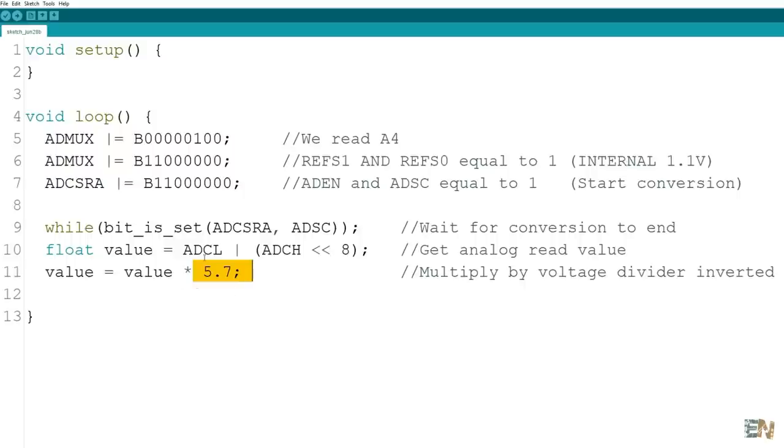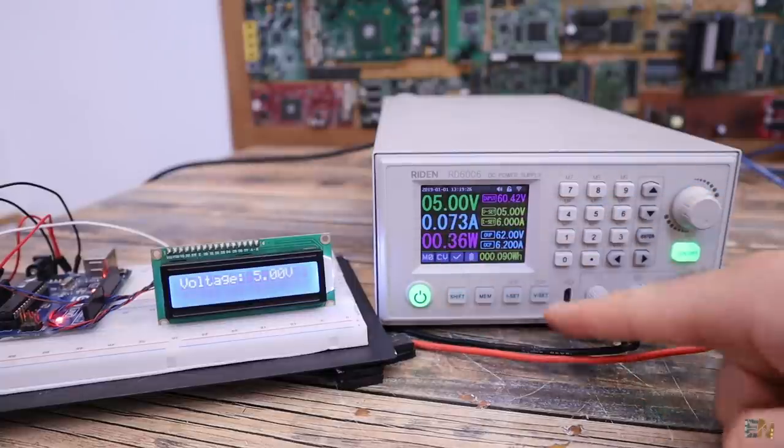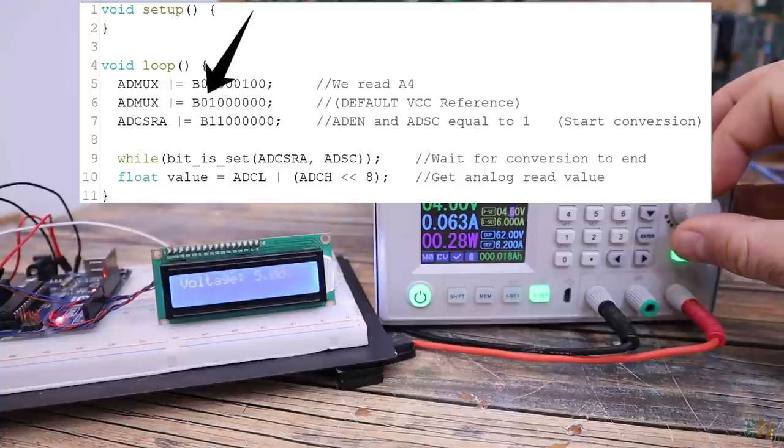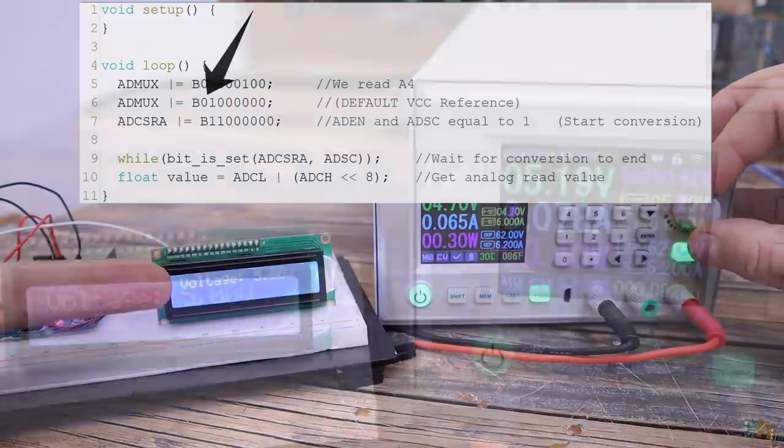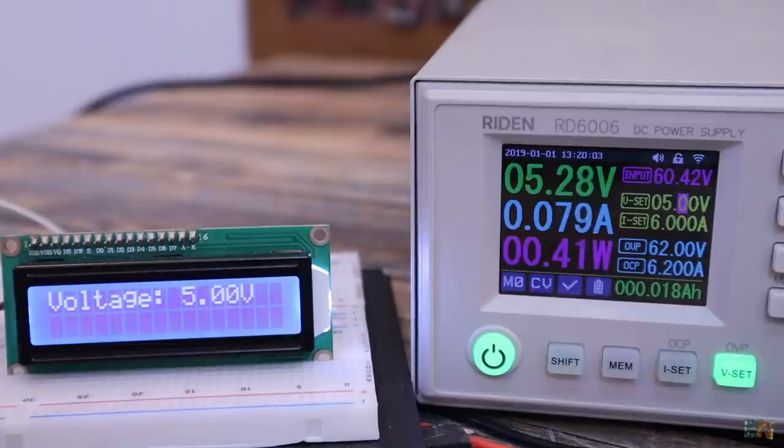So this would be the code if you want to read the voltage using the internal reference and the voltage divider of 1K and 4.7K. So here I supply my Arduino with 5V from the power supply to simulate the battery and then I run this code. In this case the reference is the default one which is VCC. On the display I print the supply level. As you can see, I start changing the supply but the value on the screen is always the same and that's not good.